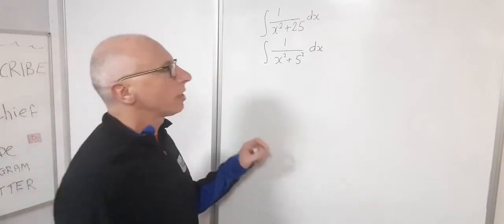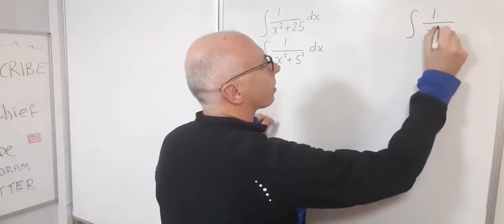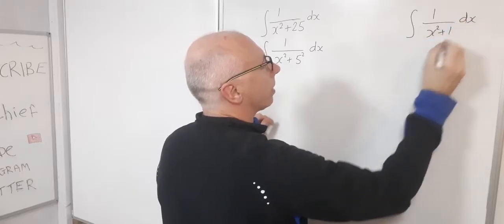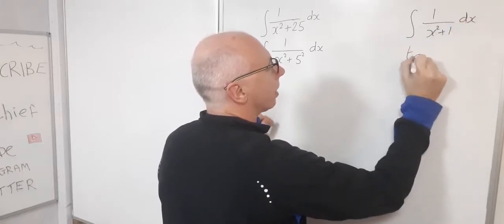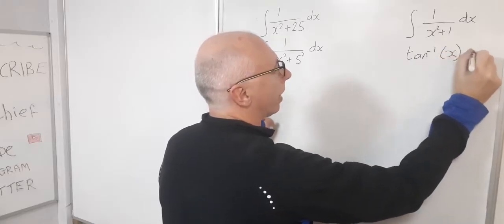So what I do know is that one integral I know of is 1 over x squared plus 1 dx. This gives us inverse tangent of x and then obviously the plus c.